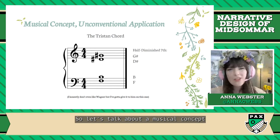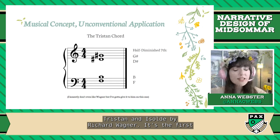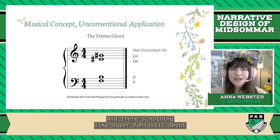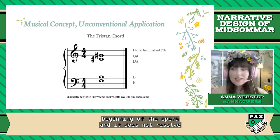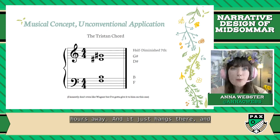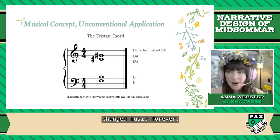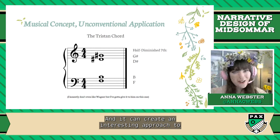Let's talk about a musical concept with a little bit of an unconventional application. The Tristan Chord is named for the opera Tristan and Isolde by Richard Wagner — it's the first chord played at the very beginning as part of Tristan's leitmotif. It's just a half-diminished seventh, but it's about where it goes, not where it starts. This chord is played at the very beginning of the opera and does not resolve until the end — and it's Wagner, so that could be hours away — and that was groundbreaking for the time and pretty much changed music forever.